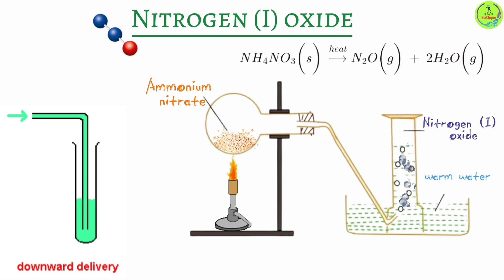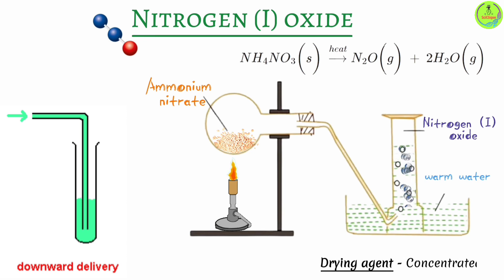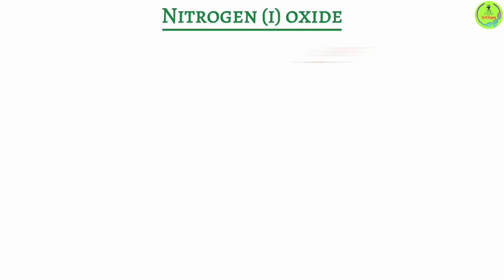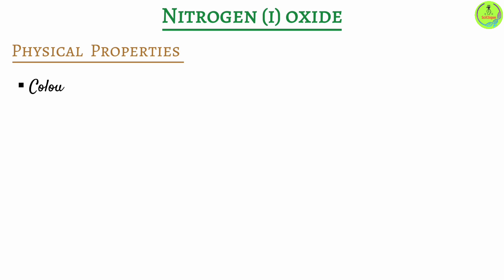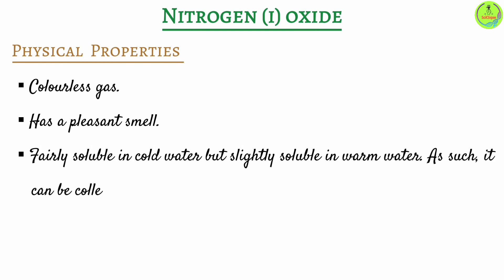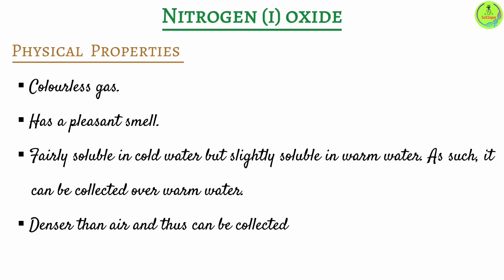Nitrogen one oxide can also be collected by downward delivery because it is denser than air. To collect dry nitrogen one oxide, you can pass it through concentrated sulfuric acid in a conical flask. Physical properties: it is a colorless gas with a pleasant smell, fairly soluble in cold water but only slightly soluble in warm water, and denser than air.